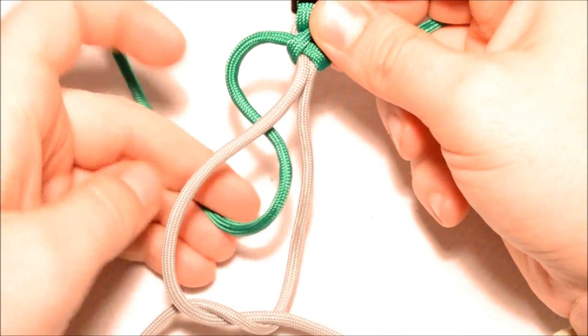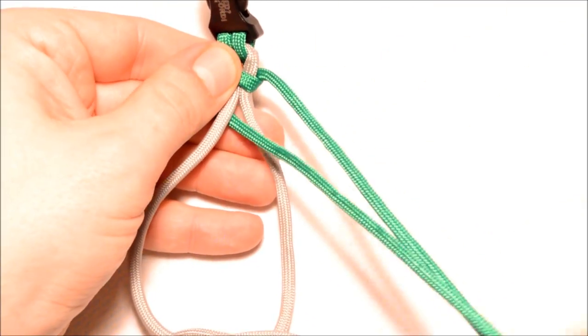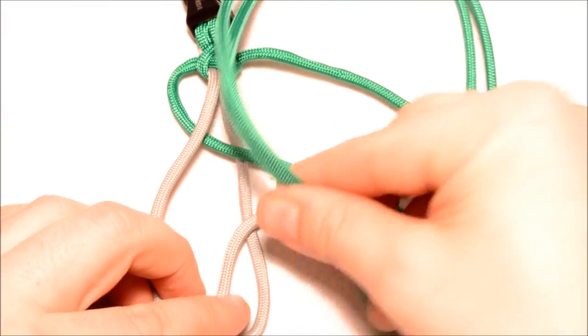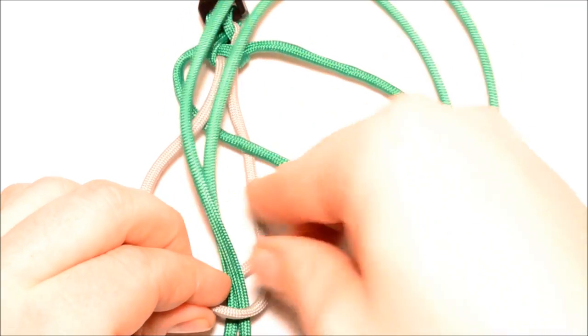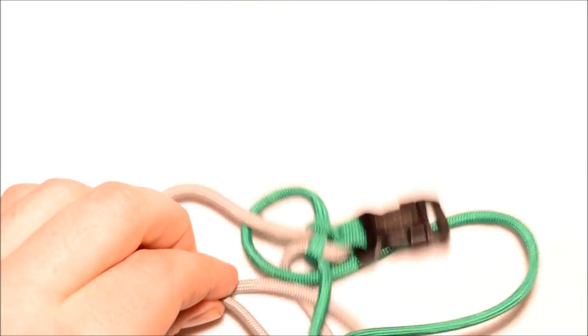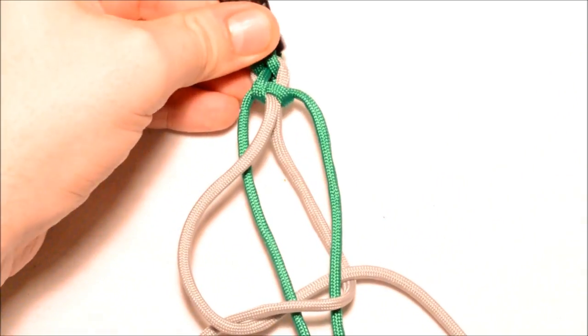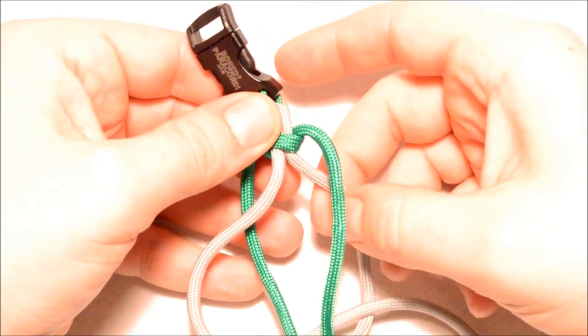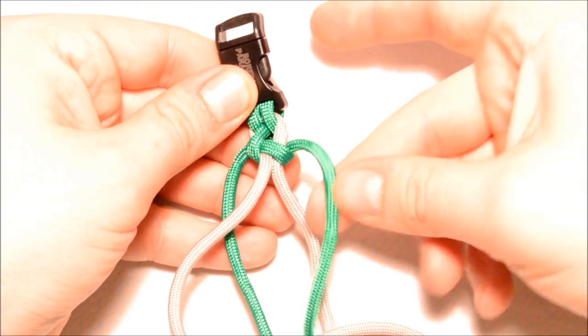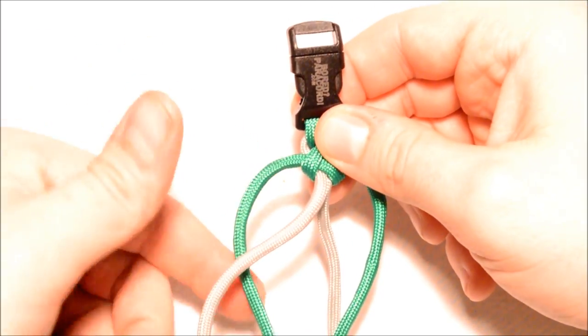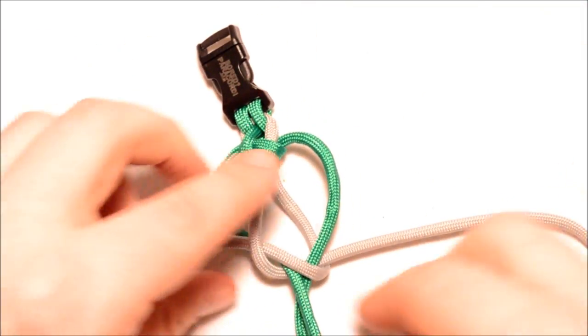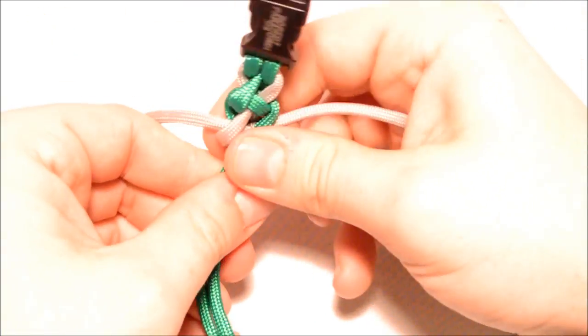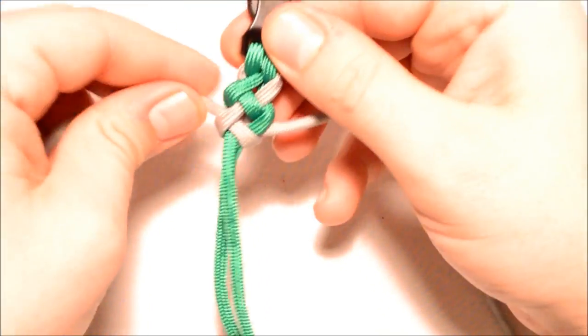And you're going to do the same thing. You're going to bring this green one through the middle, bringing these together. Open up this loop, and pass it down through there, just like that. And then you can see, again, we've got the right side over top, and the left cord underneath. Just keep cinching these together, and get it pulled up nice and snug.